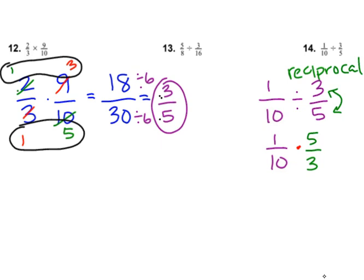Okay. And then if you want to use your shortcut and simplify first, go for it. Otherwise, 1 times 5 is 5. 10 times 3 is 30. And then I can divide both of those by 5. So 5 divided by 5 is 1. 30 divided by 5 is 6. So I would get 1/6 as my answer to number 14.